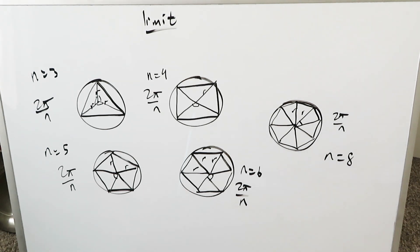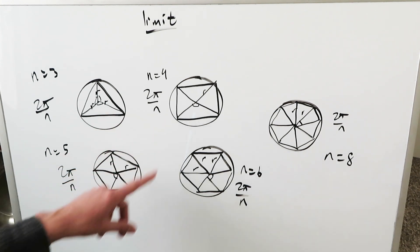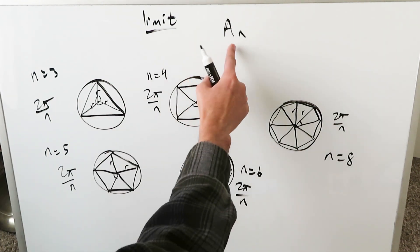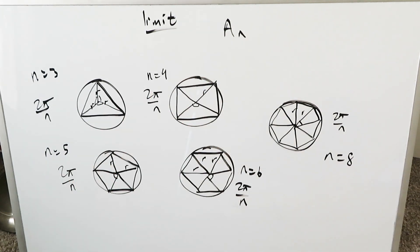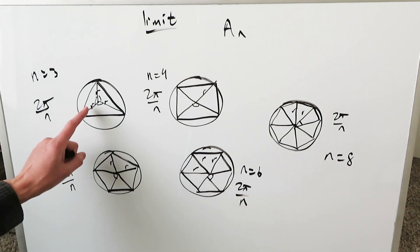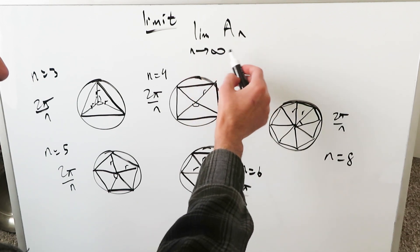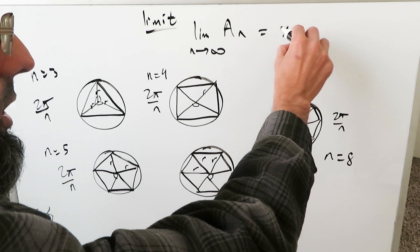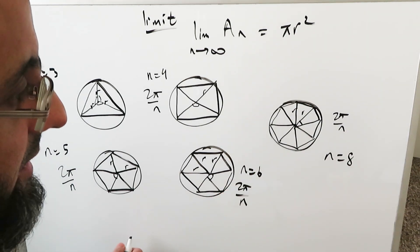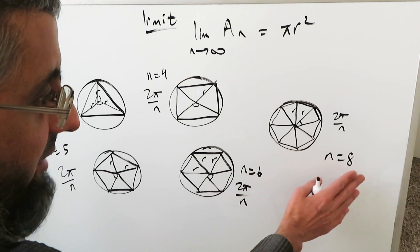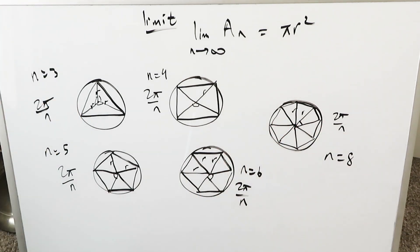What are you seeing over here? You're seeing a very interesting phenomenon. As these inscribed polygons have more equal sides, the shape of the polygon becomes more and more similar to the shape of a circle. If you were to calculate the area of these inscribed polygons — call that aₙ — then the limit as n approaches infinity of this area will approach πr², which is the area of a circle. As I draw an inscribed polygon with an infinite number of sides, 2π over n will become increasingly small, but your inscribed polygon will become a circle.